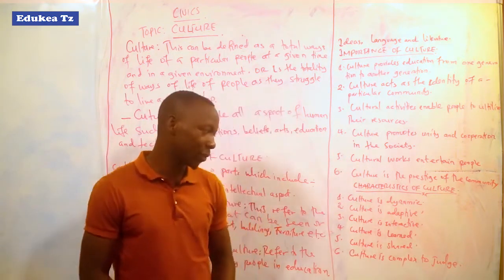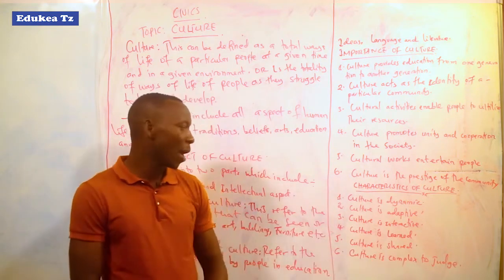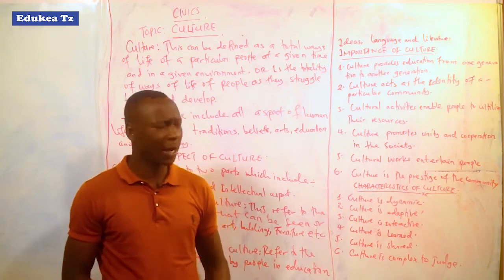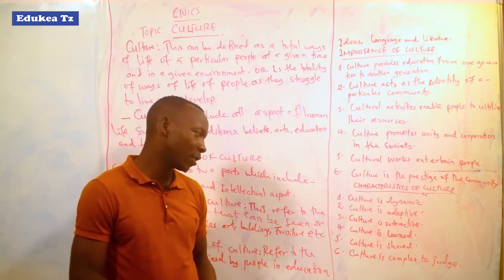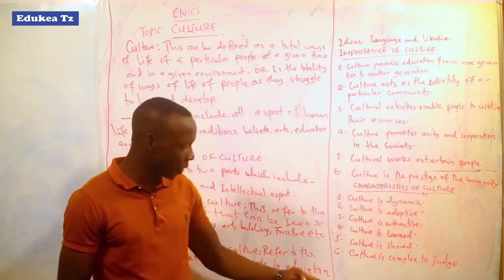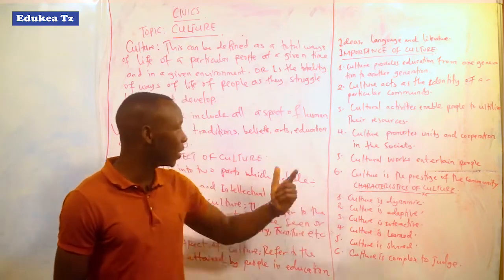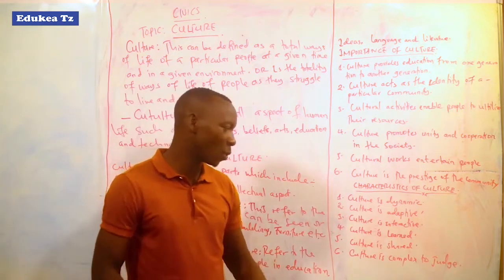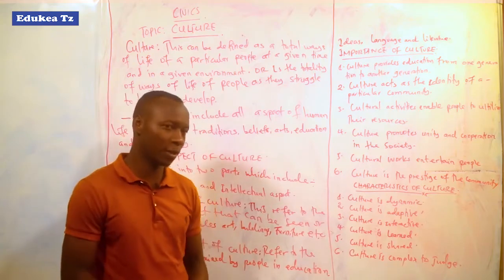Point number six: culture is complex to judge. Culture is not simple but complex because it is made up of different people. The culture of a place is composed of different people from different areas, and culture has many elements: language, norms, food, education, arts, and everything. That is all about the complexity of culture. Thank you for listening.